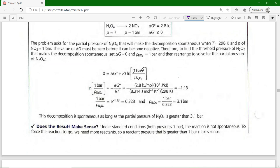So zero = ΔG° + RT ln(1 bar / P_N₂O₄) because the question asked for the minimum partial pressure of N₂O₄ at which the reaction is spontaneous if NO₂ is 1 bar. So -ΔG°/RT = ln(1/P_N₂O₄). ΔG° is 2.8 × 10³—I'm going to make it into joules because my R is joules per mole per kelvin.